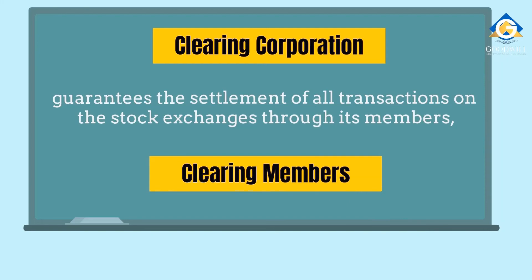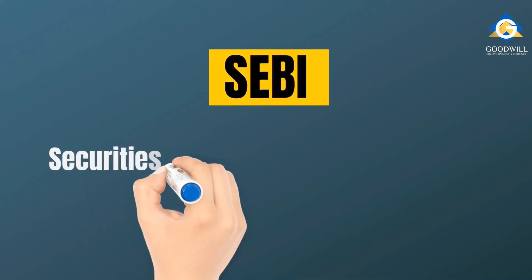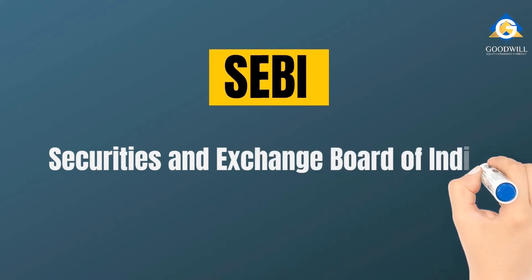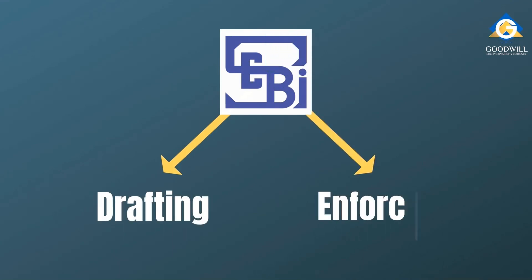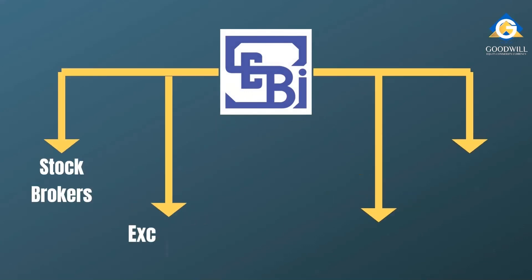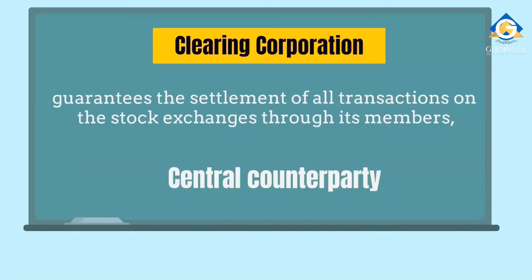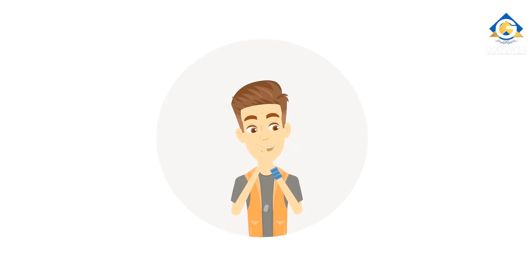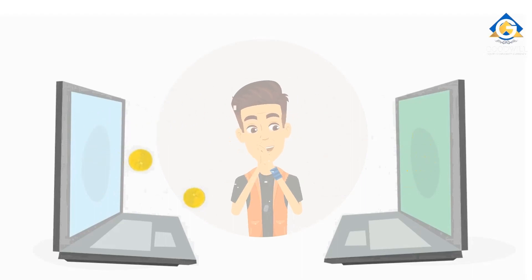The Clearing Corporation acts as the central counterparty for all trades carried out on the stock exchanges. Finally, the Securities and Exchange Board of India, or SEBI, regulates the Indian stock market. SEBI is responsible for drafting and enforcing all regulations. It regulates all market participants, including stock brokers, exchanges, depository, and clearing corporation, and protects the interests of stock market investors. With all of Rahul's doubts about the market intermediaries and processes cleared, he is ready to make his first transaction in the stock market.